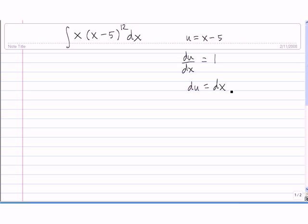Okay, so now we substitute these two pieces into the integral, and we get the integral. We don't have anything for this x, so we're going to keep that there for right now. x minus 5 is u, so we have u to the 12th, and then dx is simply du.